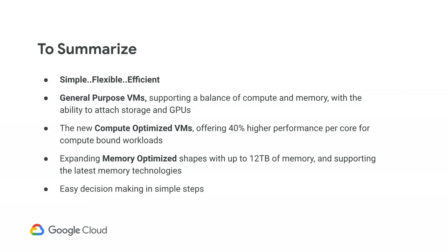To summarize, today we really focused on how we can make some of your decision-making simpler on Google Compute Engine, by making sure that we always continue to focus on simplicity, flexibility, and efficiency. We talked about how you can use simple guidelines to make choices — whether you just want a wide range of flexible options with general purpose VMs, or you're looking for the most performant option with compute-optimized VMs, or for very memory-intensive applications with memory-optimized shapes. We hope that gives you a general overview of the options available and makes it a little bit easier to decide on what you're looking for on Google Compute Engine.